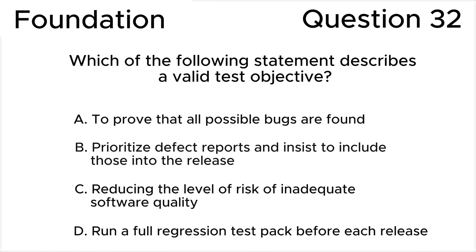Which of the following statements describes a valid test objective? A: To prove that all possible bugs are found. B: Prioritize defect reports and insist to include those into the release. C: Reducing the level of risk of inadequate software quality. D: Run a full regression test pack before each release. Please press pause to choose your own answer before you see the correct answer on the screen.